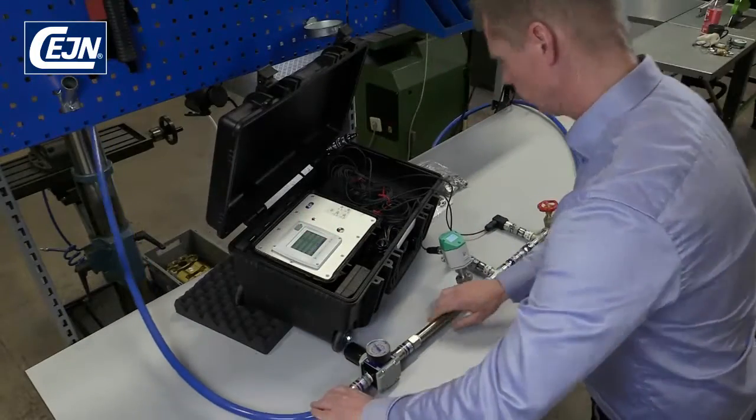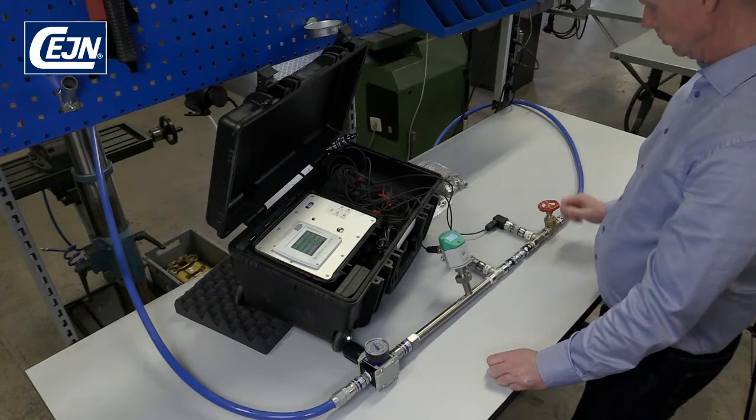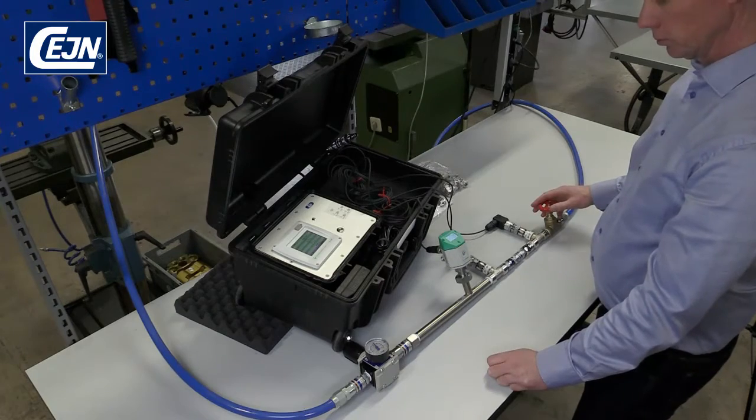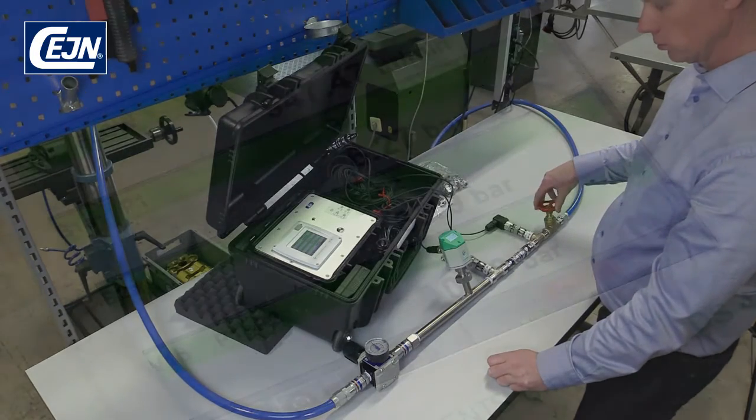When you connect the hose, check that the pressure is not over 10 bar. Normally the pressure is around 6 to 7 bar.